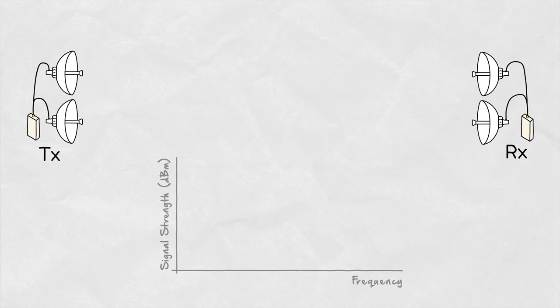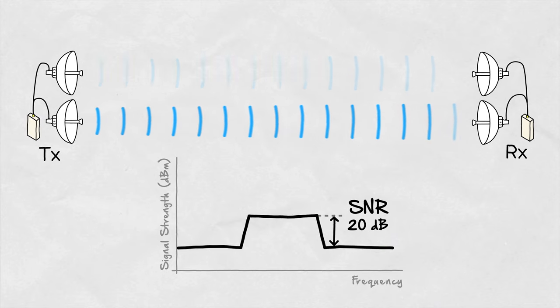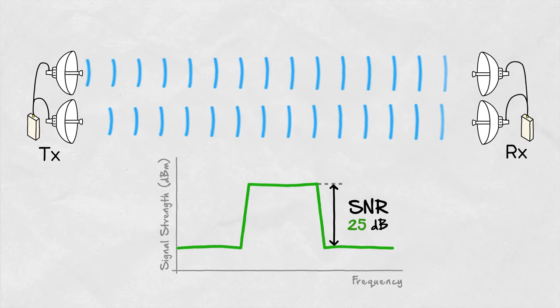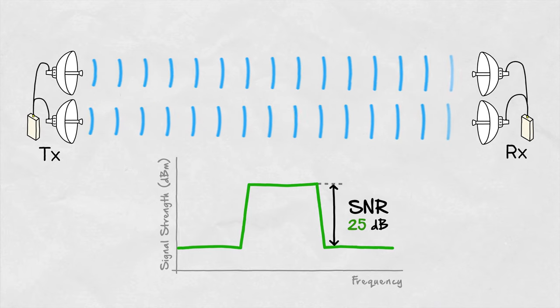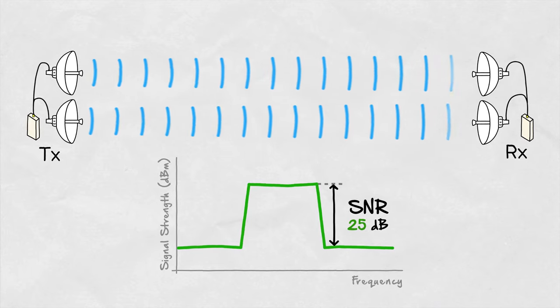First is array gain, which is an increase of received signal SNR from combining the signals arriving from different directions. Array gain improves resistance to noise and therefore the coverage and maximum range of a wireless link.